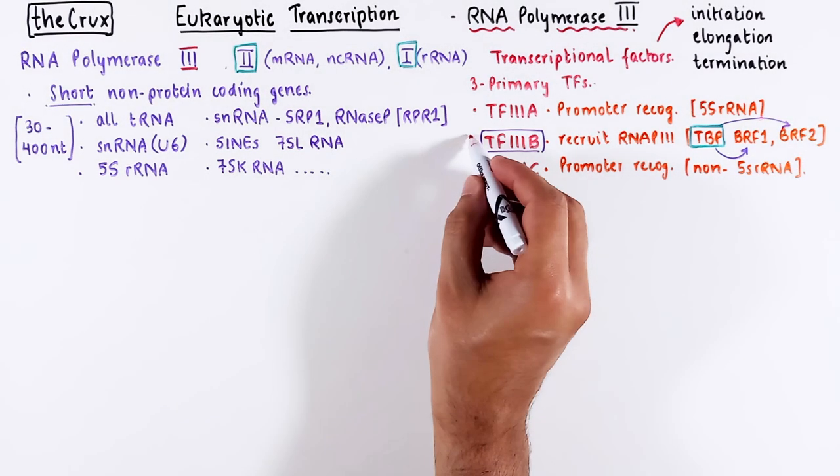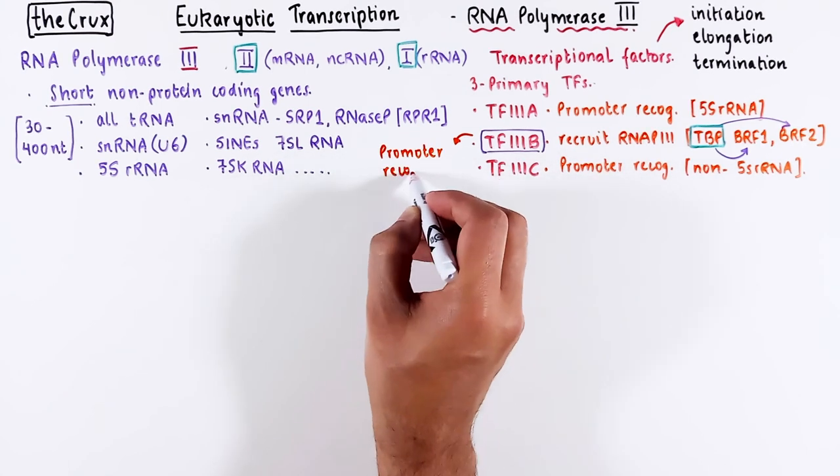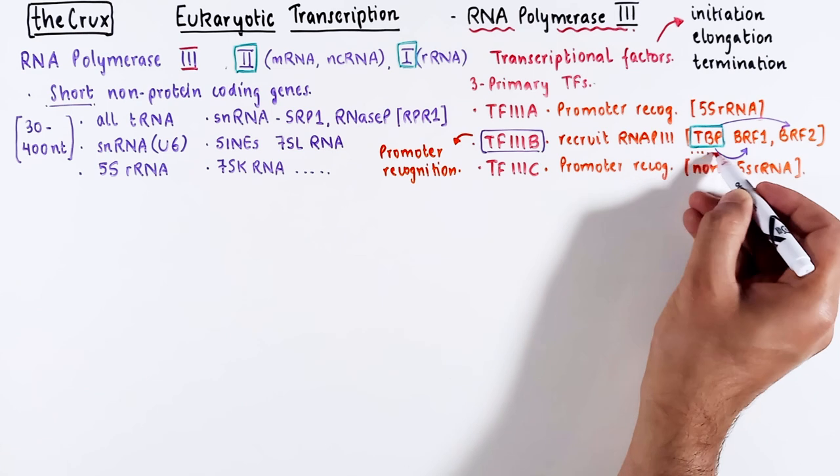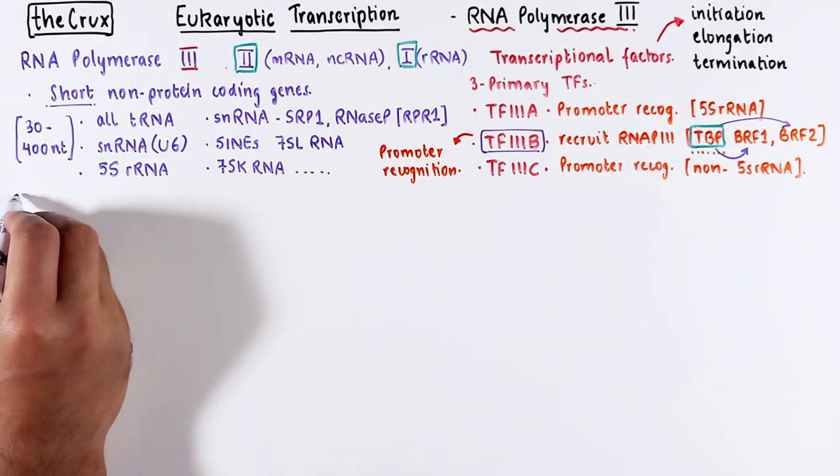TF3B can sometimes also recognize promoters, since TBP is present in this factor. I have videos on RNA polymerase 2 and RNA polymerase 1 transcription, and you can find the links in the description if you would like to explore these topics further.